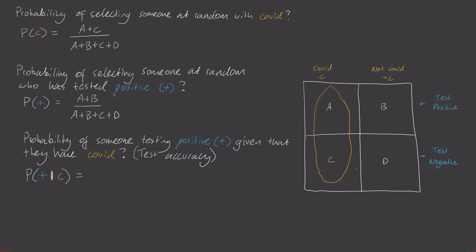Well, what's the probability of testing positive in this new space? Well, it's just capital A. And what's the total number of people in this new space? Well, it's just A plus C. And so our probability is A divided by A plus C.